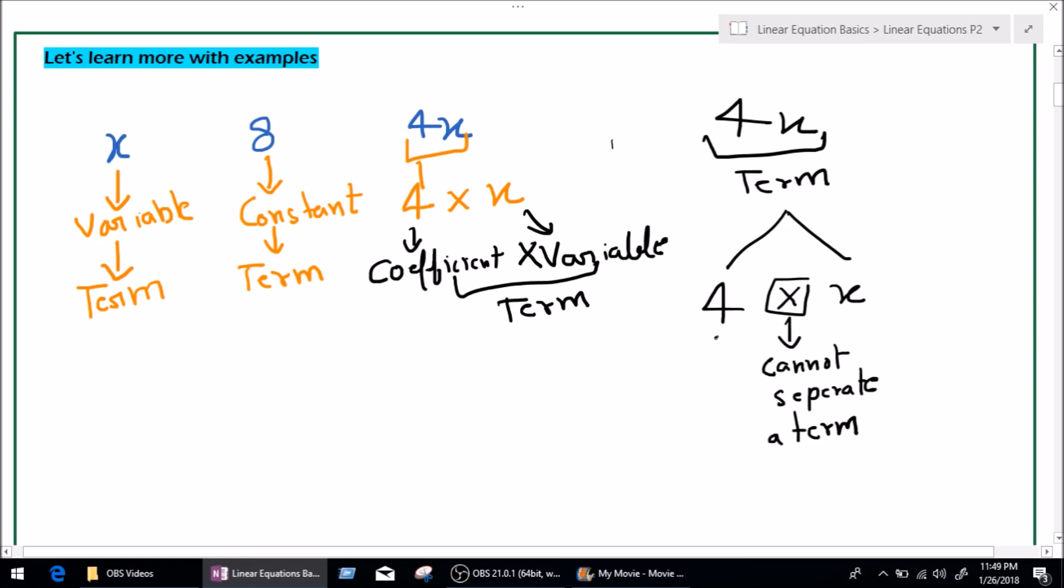If it could separate a term, 4 would be a constant and x would be a variable. And since 4 would be a constant, it would be a term itself. And variable would be a term itself. Which will give out two terms.